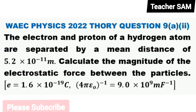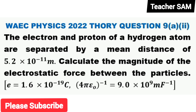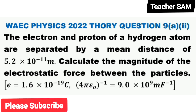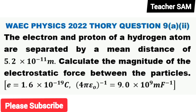Question 9. The electron and proton of a hydrogen atom are separated by a mean distance of 5.2 times 10 raised to negative 11 meters. Calculate the magnitude of the electrostatic force between the particles. Take the charge of the electron to be 1.6 times 10 raised to negative 19 coulombs, and 4 pi epsilon-naught raised to negative 1 equals 9.0 times 10 raised to the power 9 meters per farad.